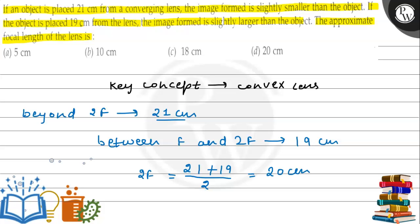So this means if F equals 10 centimeter, that satisfies both conditions — 2F would be 20 cm, placing 21 cm just beyond 2F and 19 cm just inside 2F, between F and 2F. So the approximate focal length is 10 centimeter.